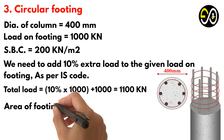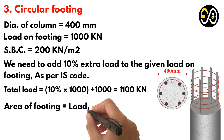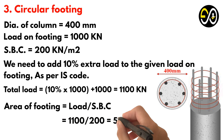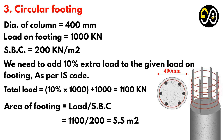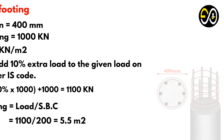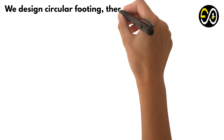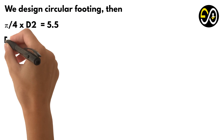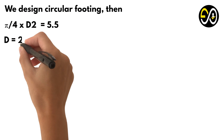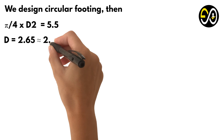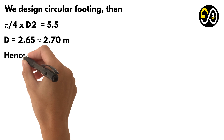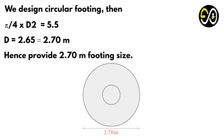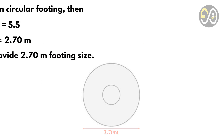Area of footing equals load over safe bearing capacity, equals 1,100 over 200, equals 5.5 square meters. We design circular footing: Pi over 4 times diameter squared equals 5.5, so diameter equals 2.65 meters, approximately 2.70 meters. Hence provide 2.70 meters footing size.